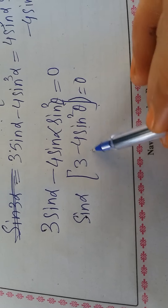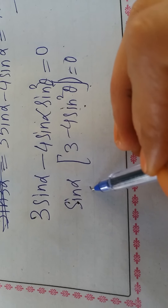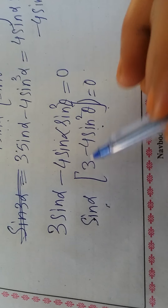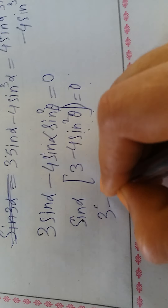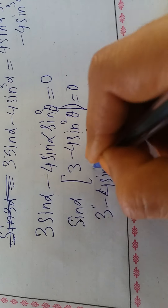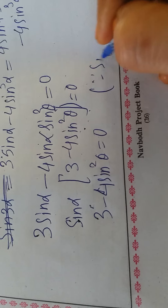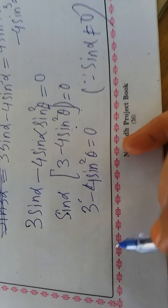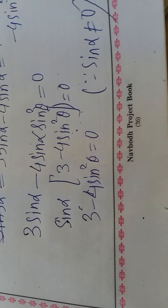Now either sinα = 0 or the bracket term equals 0. Since no information is given about sinα and our variable is θ, sinα is not equal to 0. So 3 - 4sin²θ = 0, which gives 3 = 4sin²θ.